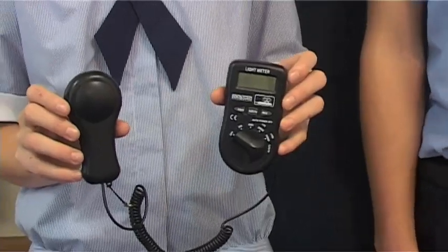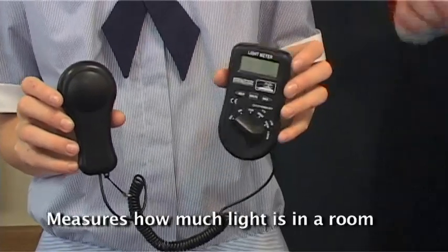What you got there Georgia? A lux meter. Oh that's right. A lux meter or light meter is used to measure how much light is in a room.